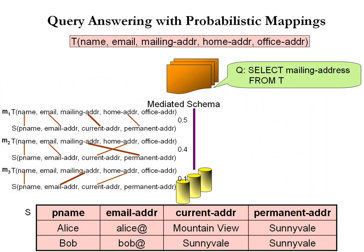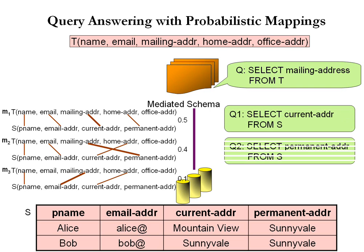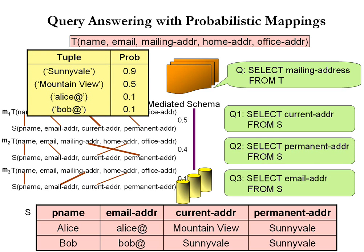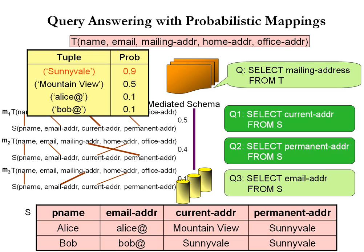We will discuss the precise semantics of multiple mappings in a moment. Suppose the system receives a query asking for people's mailing addresses. According to different possible mappings, the query can be reformulated into three different queries on the sources. The system answers each reformulated query on the data source, assigning the probability of the answers according to the probability of the mappings, and then sums up the probabilities for each distinct answer tuple. Suppose the user requires only the top-1 answer. After executing q1 and q2, the system can already conclude that Sunnyvale is the top-1 answer and can skip q3.